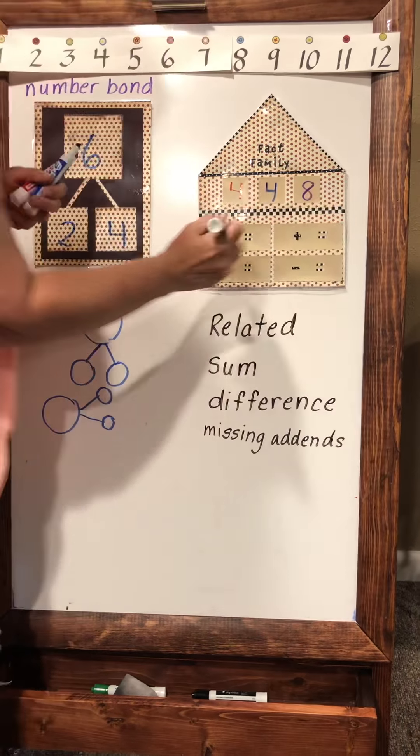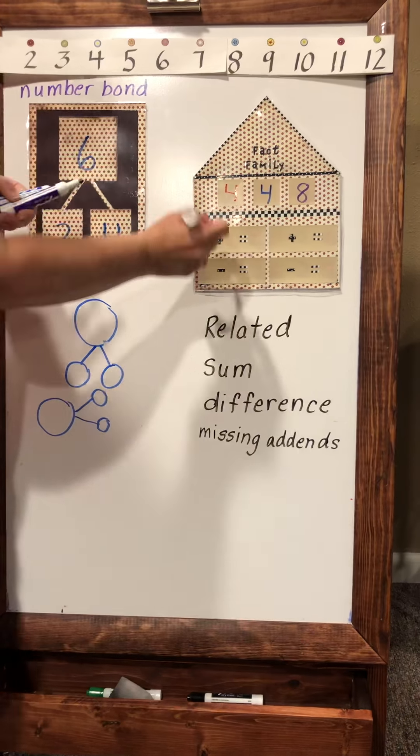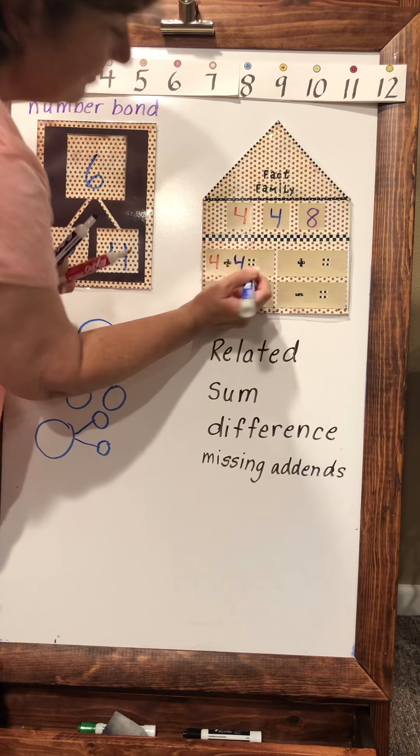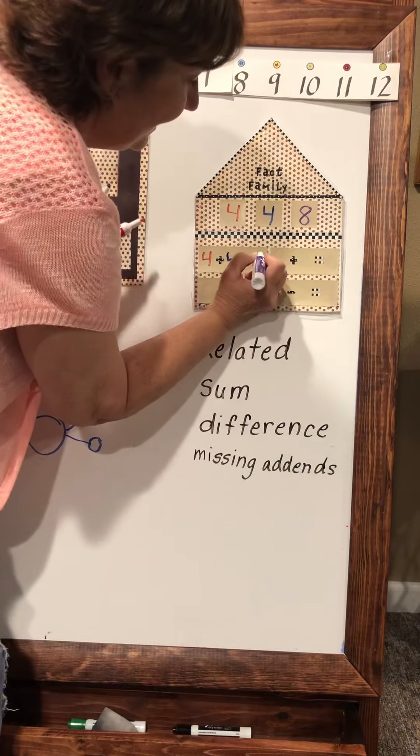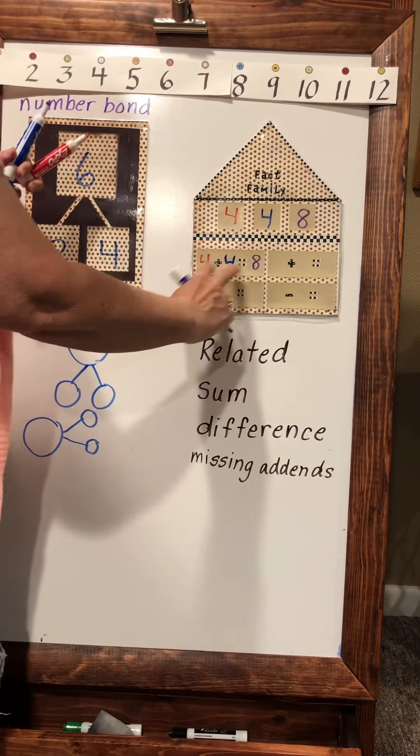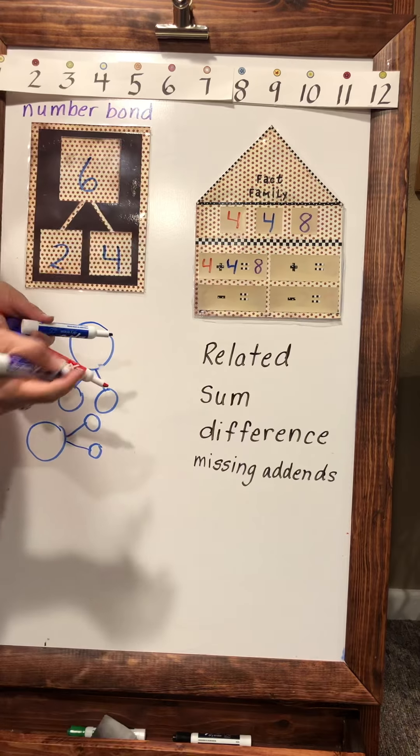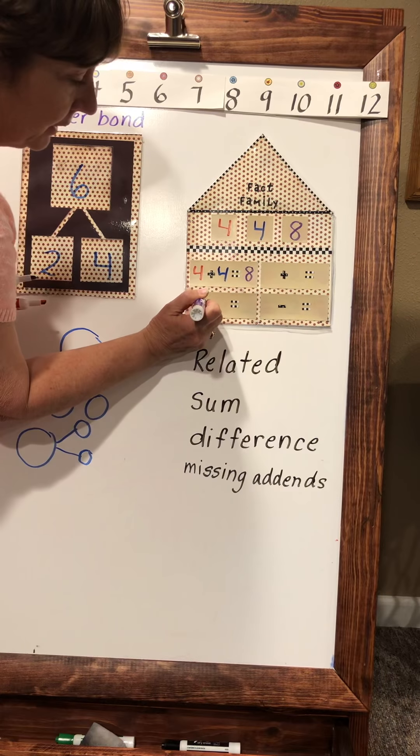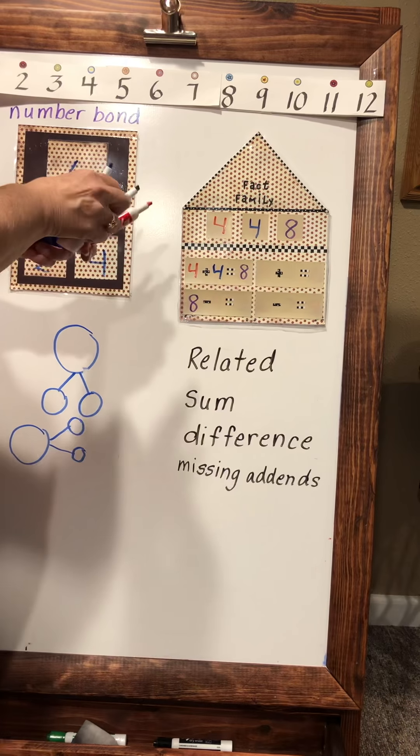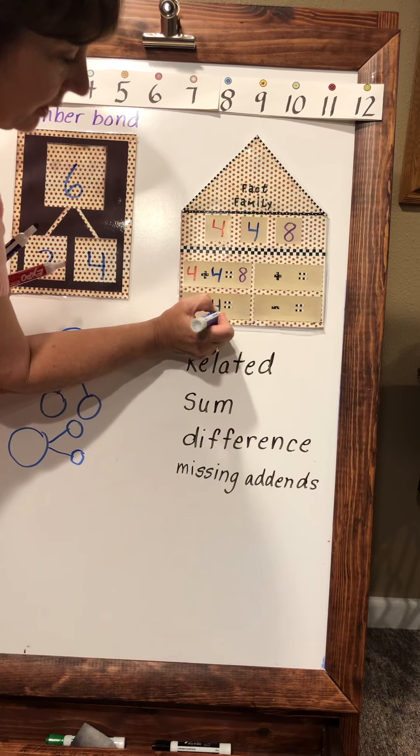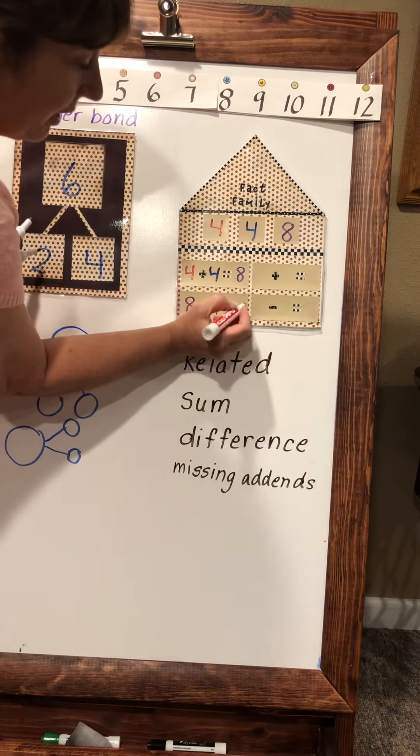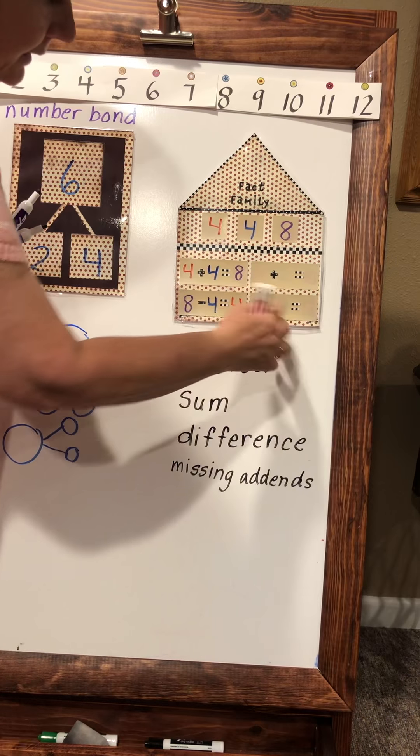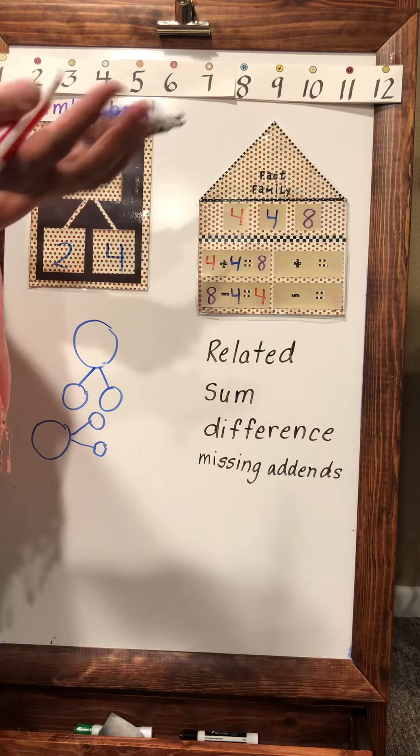When I do my first sentence it says four plus four is eight. Now think, even if I switch those around it's still going to say four plus four is eight, so you don't need to do this. The same is true with the subtraction part. If I have eight, I take away four, it will leave me with four. Even when I switch these two numbers in different places, it's still going to say eight minus four is four.